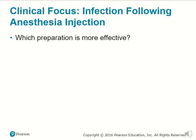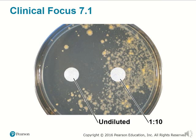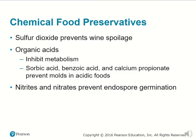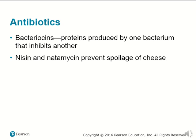Clinical focus: infection following anesthesia injection is best prevented by having a clean, sterile needle. Chemical food preservatives include sulfur dioxide, which prevents wine from spoiling; organic acids that inhibit metabolism such as sorbic acid, benzoic acid, or calcium propionate, which prevent molds in acidic foods. Nitrites and nitrates prevent endospore germination. Antibiotics such as bacteriocins — proteins produced by one bacterium that inhibit another — as well as nisin and natamycin, can prevent spoilage of cheese.